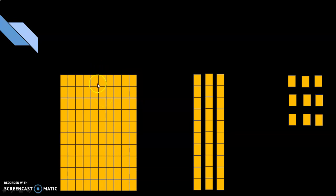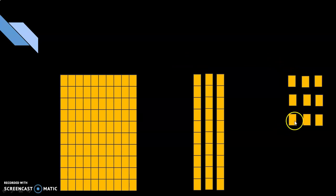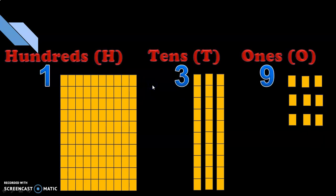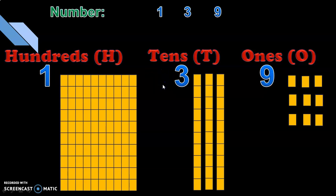So you have 100 as 1 unit. The next one is we have 3 tens, which makes 30. And then in the 1s place, we have 9 ones. Can you guess the number? Yes — it is 100, plus 3 tens (30), plus 9. The number is 139.